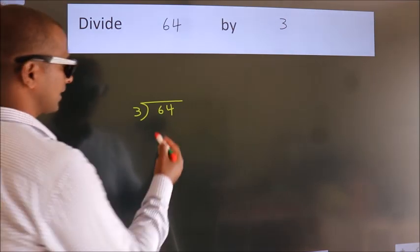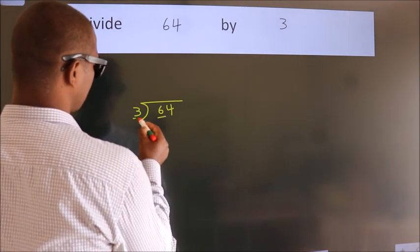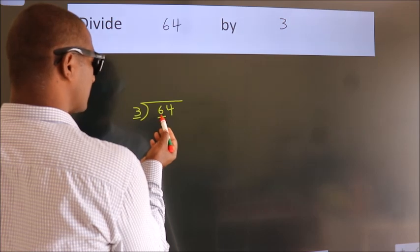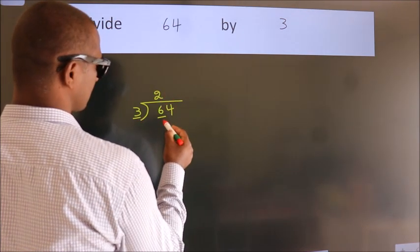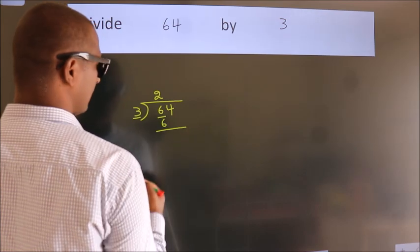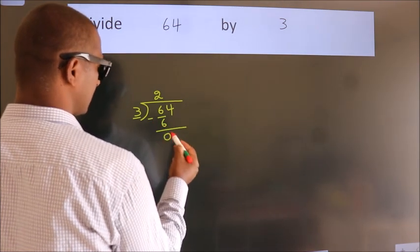Next, here we have 6, here 3. When do we get 6? In the 3 table. 3 times 2 is 6. Now we should subtract. We get 0.